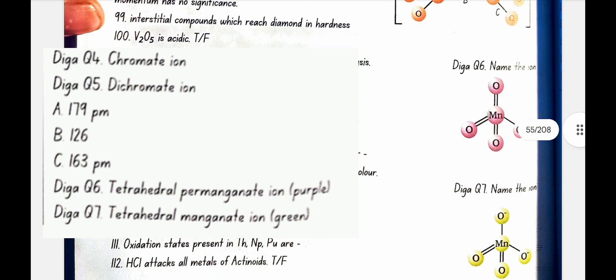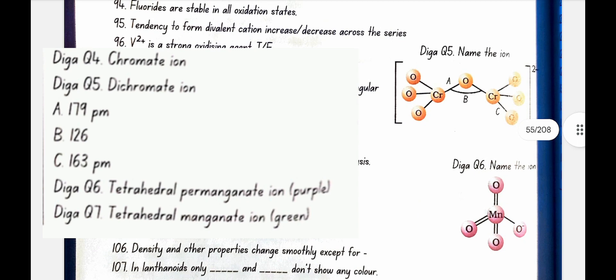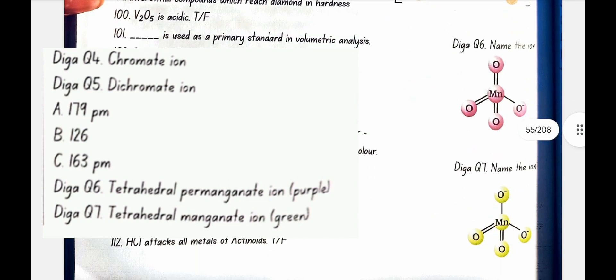Diagram four: name the ion. This ion is chromate ion. Name the ion. This ion is dichromate ion. In diagram five A is 179 picometer, B is 126, then C is 163. Diagram six is tetrahedral permanganate ion, it is purple in color. In diagram seven, this is tetrahedral manganate ion, this is green in color.